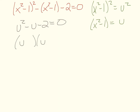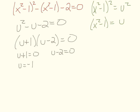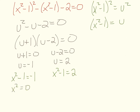Factoring with negative 2 and positive 1 — since 1 times negative 2 is negative 2 and negative 2 plus 1 is negative 1 — and setting each factor to zero gives u equals negative 1 and u equals 2. Substituting back, we get x squared minus 1 equals negative 1 and x squared minus 1 equals 2.